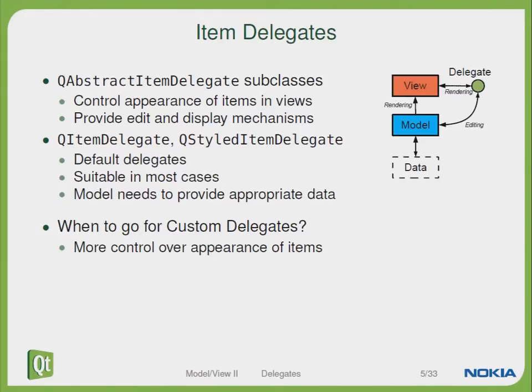There are some predefined item delegates, or QStyleItemDelegates, available which act as a default delegate. These classes are suitable in most cases. But the model has to provide the appropriate data so that the view can display it.